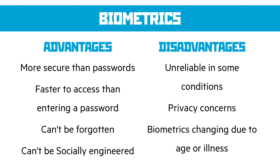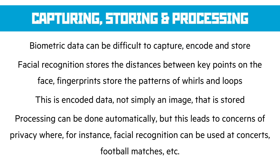Biometrics has advantages and disadvantages. The main advantages are that it's much more secure than a password, it's faster to access, it can't be forgotten, and it can't be socially engineered. There are disadvantages though — it's sometimes unreliable, and there are privacy concerns with some people being uncomfortable having biometrics stored in a centralized database. Biometrics can also change due to age or illness. It can be difficult to capture, encode, and store biometric data because different types require different representations — for example, facial recognition stores the distance between key points on the face, like the nose and eyes, while fingerprints store the patterns of whorls and loops. It's encoded data, not just an image.